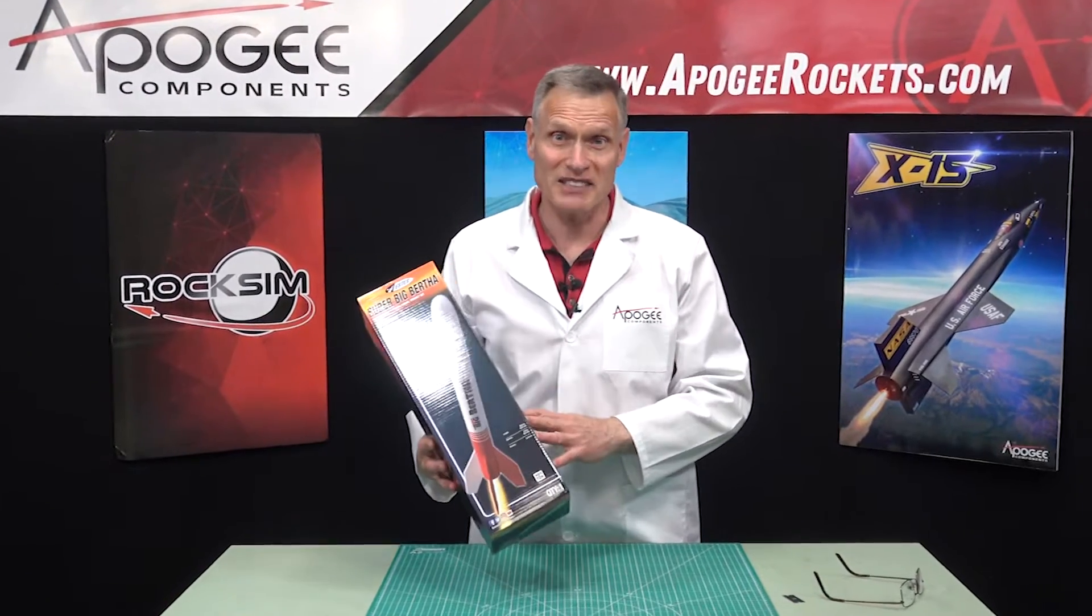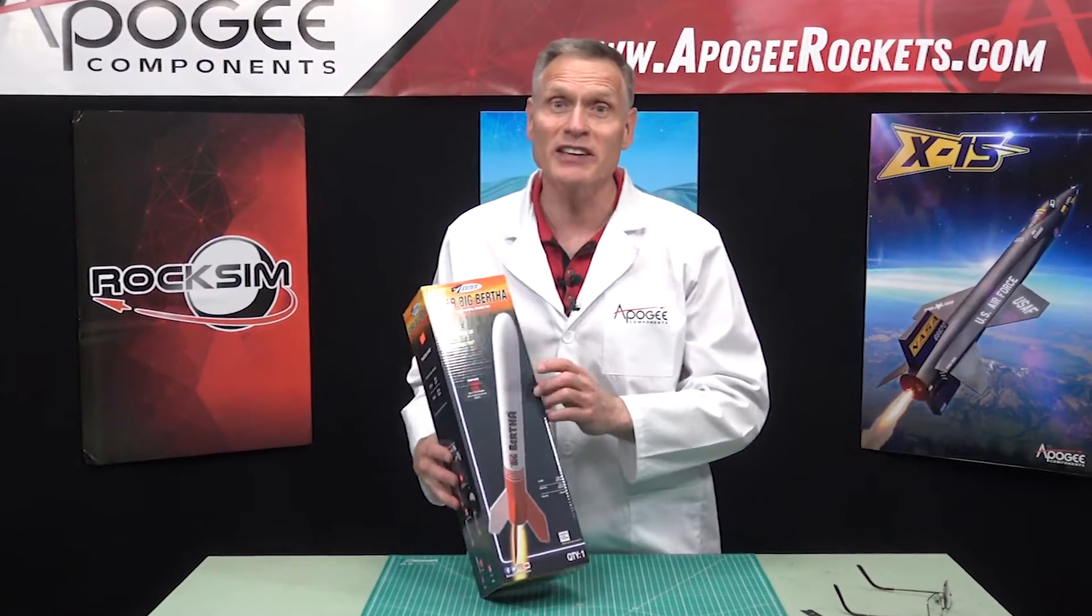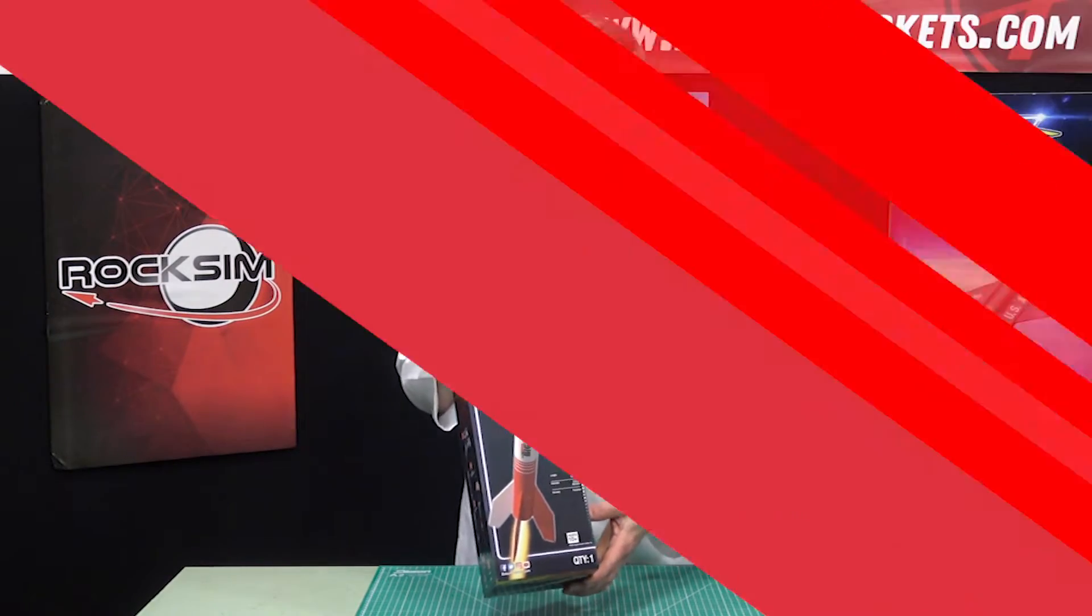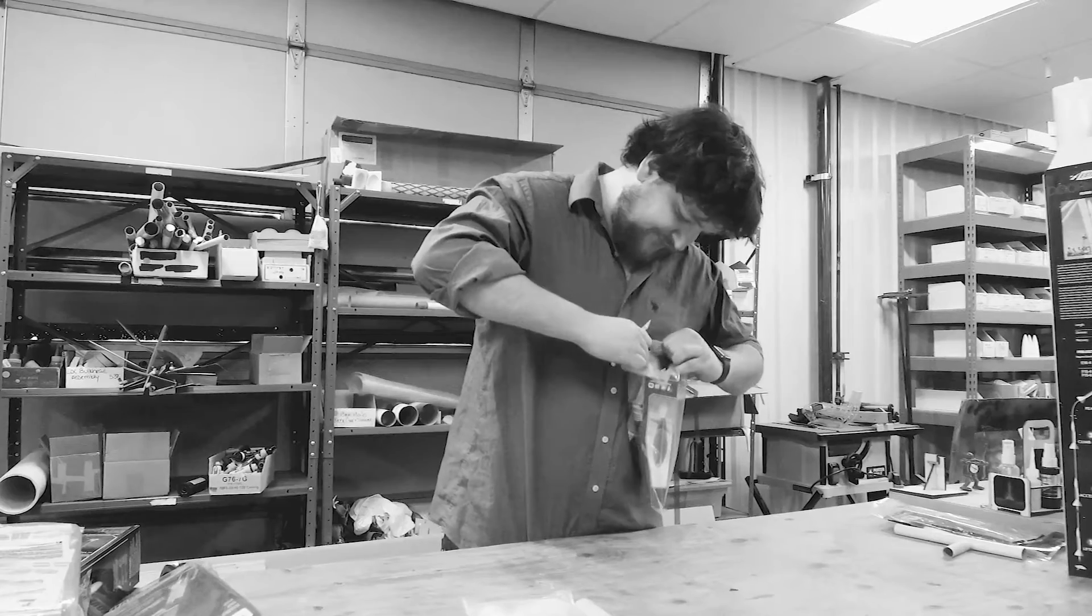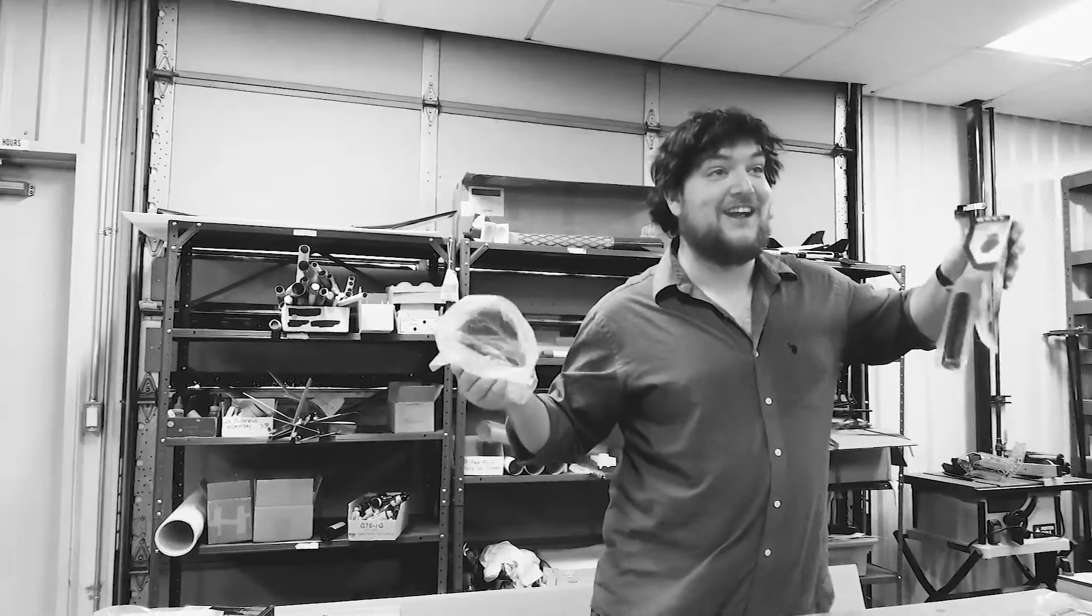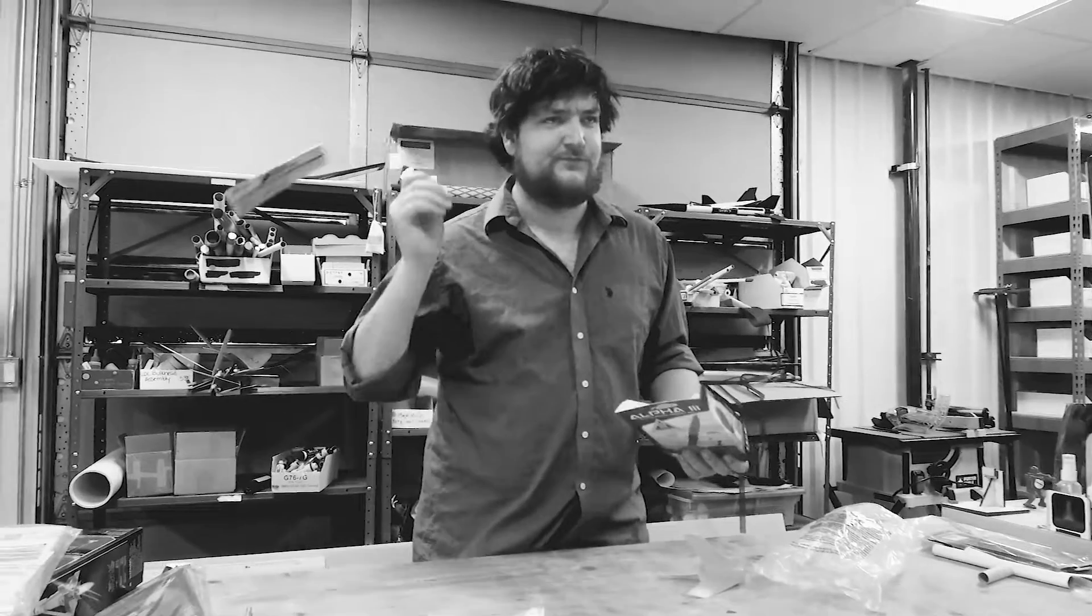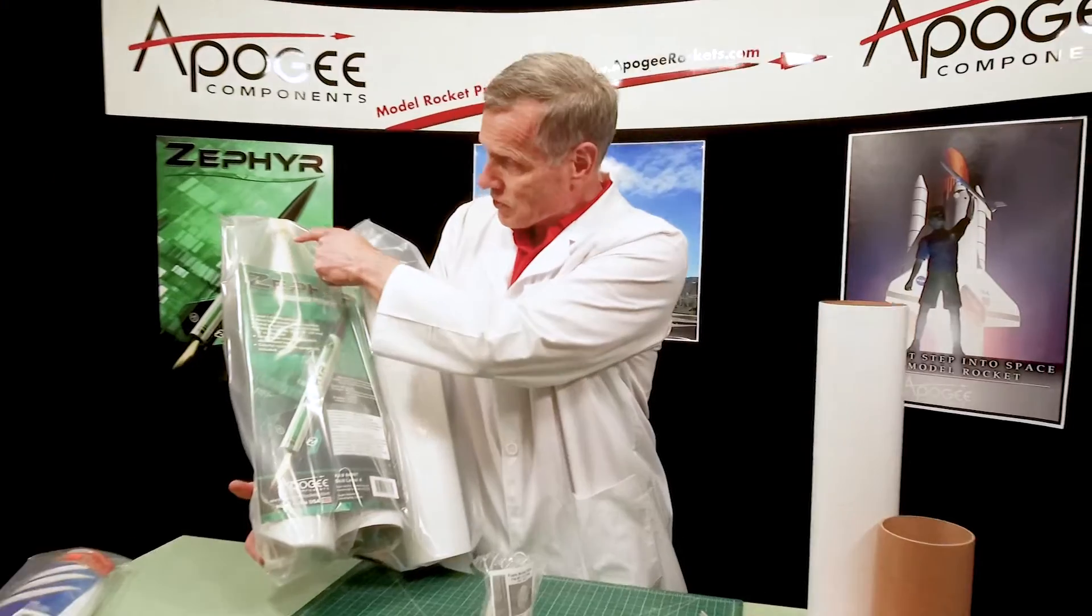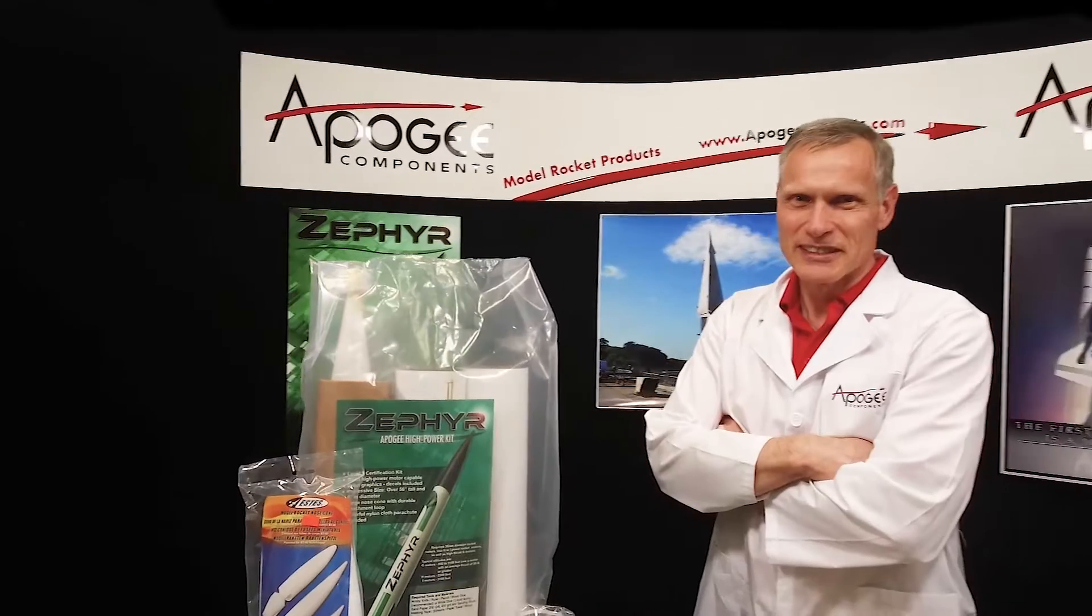In this episode of Unboxing with a Rocket Scientist, we're going to take a look at the Estes Super Big Bertha Rocket Kit. There are many unboxing videos for model rockets, but wouldn't you like a real rocket scientist's opinion of the materials and parts in the kit? Today you'll actually find out the inside information, so that you know what to look for when you get a rocket kit.